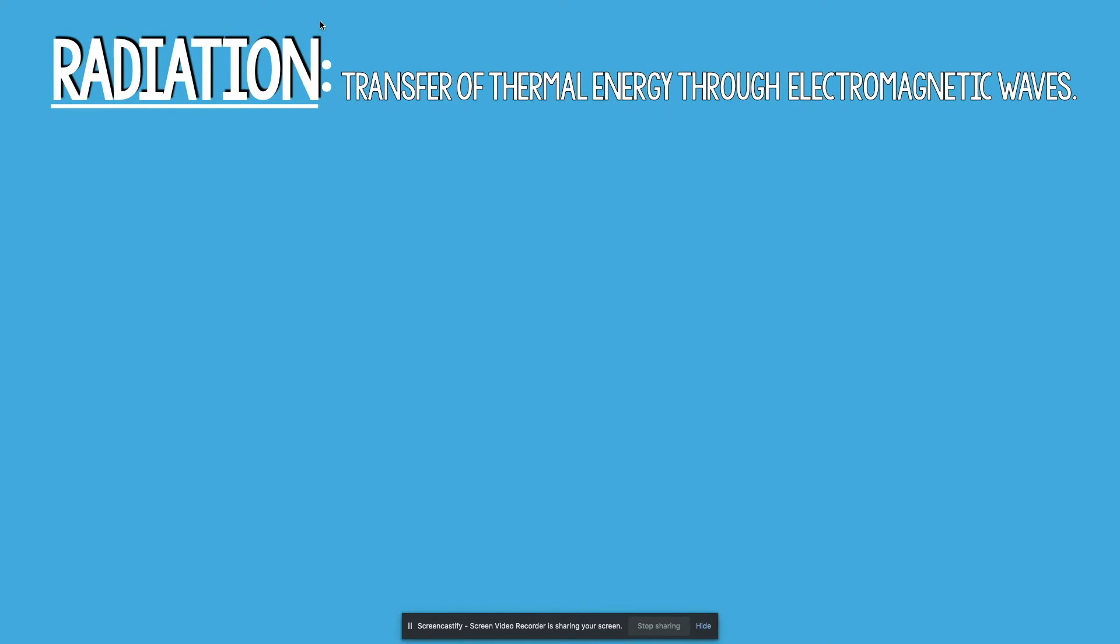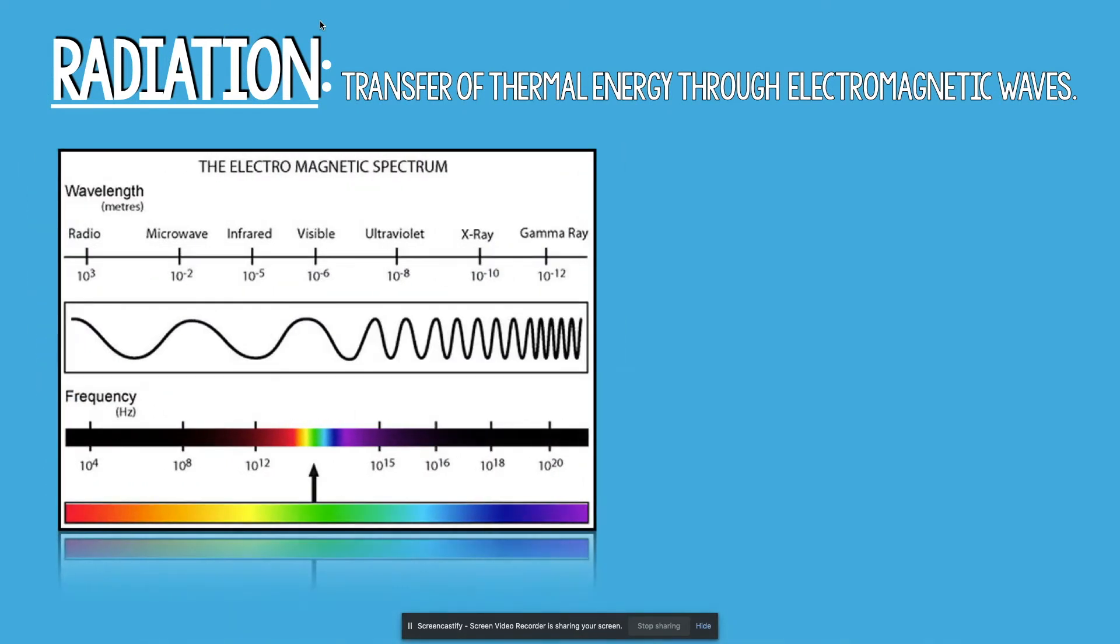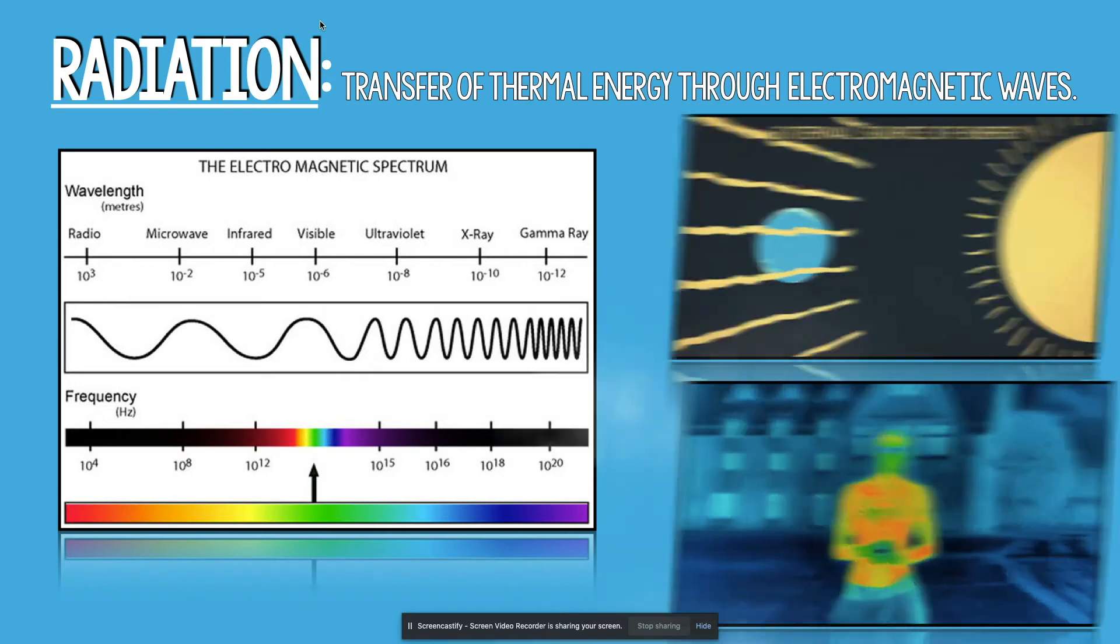Number three: radiation, the transfer of thermal energy through electromagnetic waves. There are plenty of examples of electromagnetic radiation, from radio waves to microwaves to infrared, visible light, ultraviolet, x-rays, and even gamma rays.